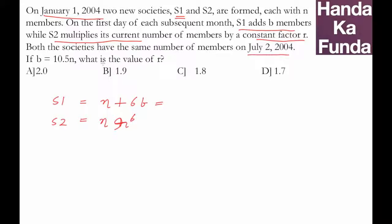Now, b is given as 10.5n, so this is n plus 10.5 times 6. 10.5 times 6 is 63, giving us n plus 63n, which equals 64n.